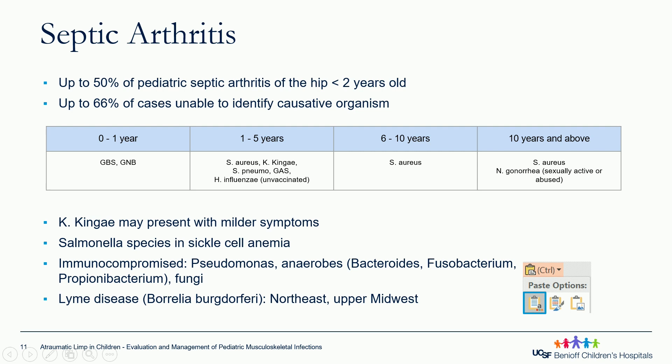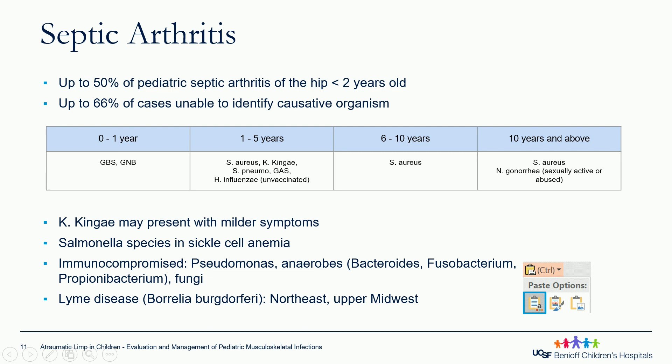For Kingella kingae septic arthritis, the presentation is usually milder — fever may be a little less, inflammatory markers might be elevated but less so, and sometimes even with range of motion patients can toe-touch weight-bear. So they can present atypically. Salmonella can often be found in sickle cell disease. Immunocompromised patients can have atypical microorganisms as well — Pseudomonas, anaerobes, or fungal infections.